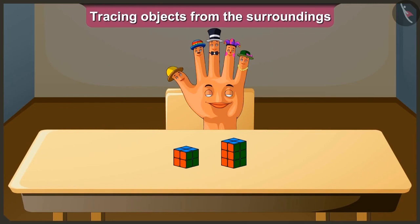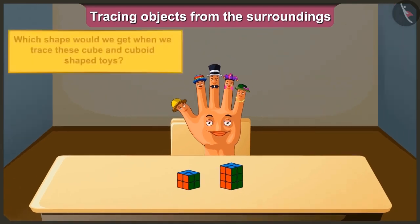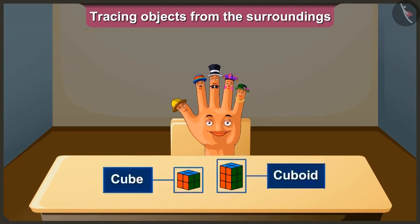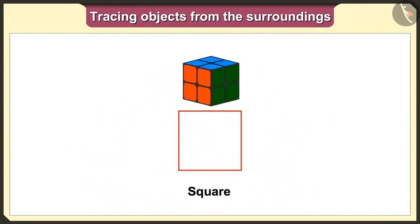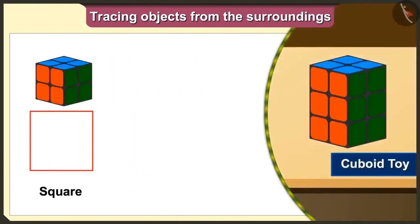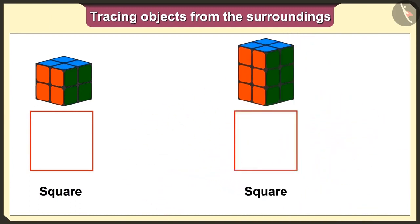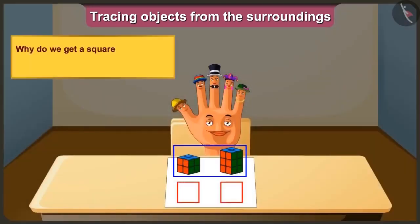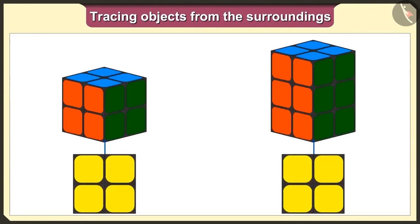Hey Tallman! Look! This is a cube-shaped toy and this is a cuboid-shaped toy. Now tell me which shape we would get when we trace these cube and cuboid-shaped toys. Let's keep these toys on a paper and trace them. If we keep this cube toy on paper and trace it, we will get a square shape. And if we keep this cuboid toy on paper and trace it, we will also get a square shape. But why? Because the base of these two toys are square.